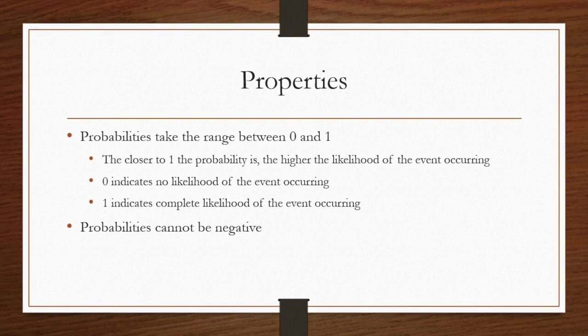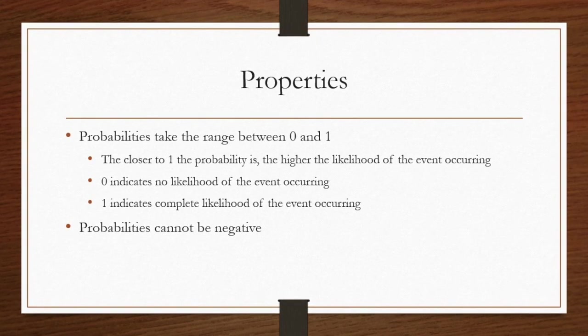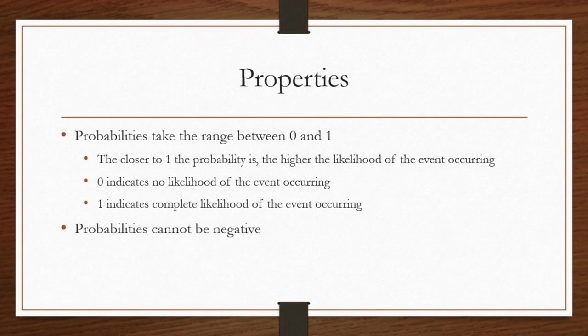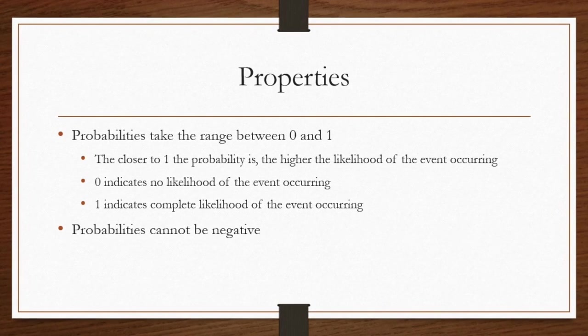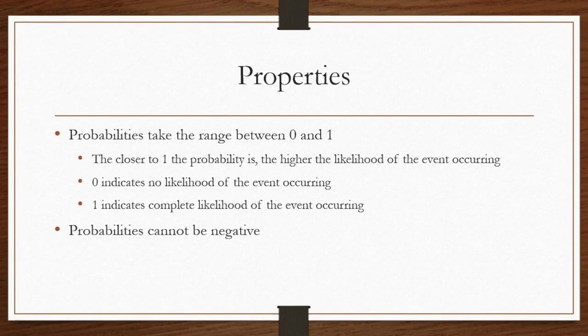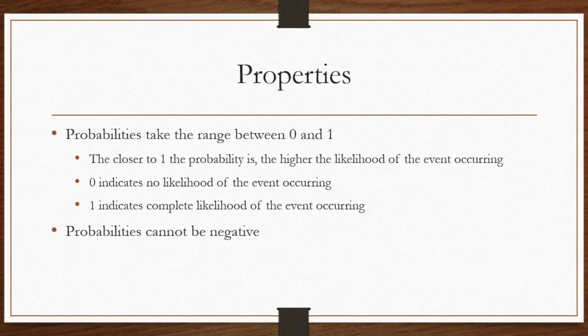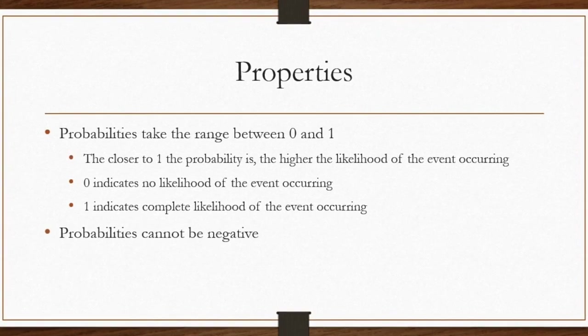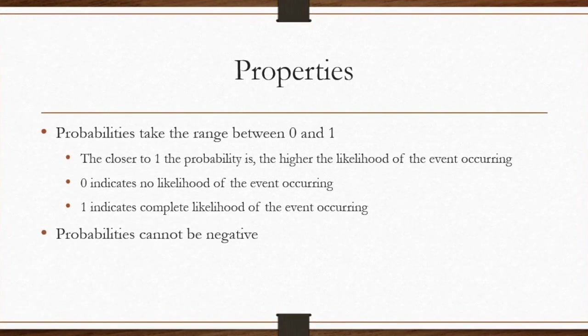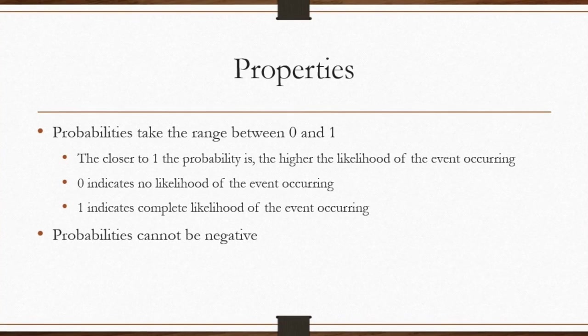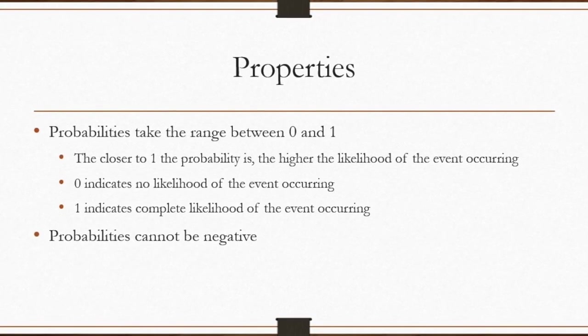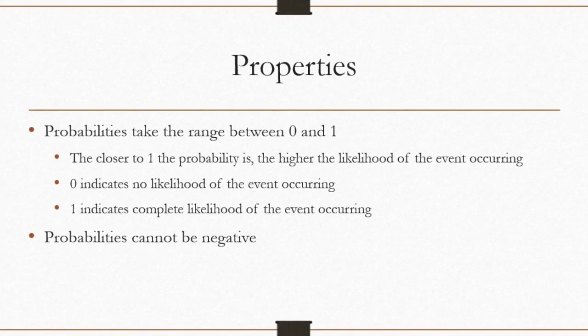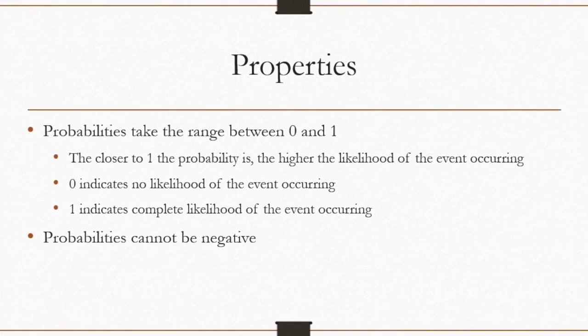First, we have to mention that events are assigned a probability of occurring, and this probability is bounded by zero and one. The closer a probability is to zero, the lower the chance of occurrence. Similarly, if a probability is closer to one, it has a larger chance of occurring. A probability of zero represents no possibility of occurring, while a probability of one means that the outcome will always occur. Additionally, a probability cannot be negative.